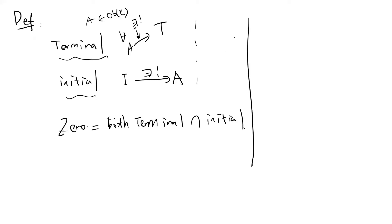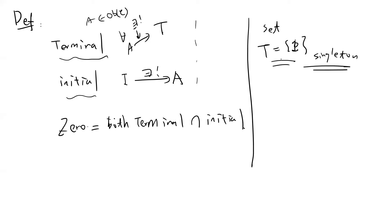In the category of Sets: the terminal object is the singleton set — you always have a unique map by sending all elements to the single element. The initial object is the empty set — there is only one map from the empty set to any set by definition. So in Sets there is no zero object.